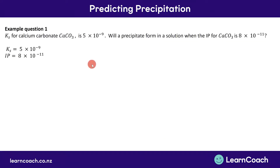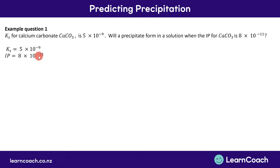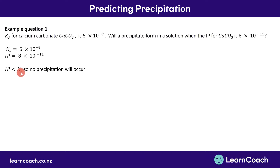Let's do an example. The Ks for calcium carbonate is 5×10⁻⁹. Will a precipitate form if the IP for calcium carbonate is 8×10⁻¹¹? We just need to compare Ks and IP. A common mistake is looking at the 11 and 9 and saying IP is bigger — but remember these are negative exponents. Negative 9 is the bigger number, so Ks is greater than IP. The solution is unsaturated and a precipitate will not form.